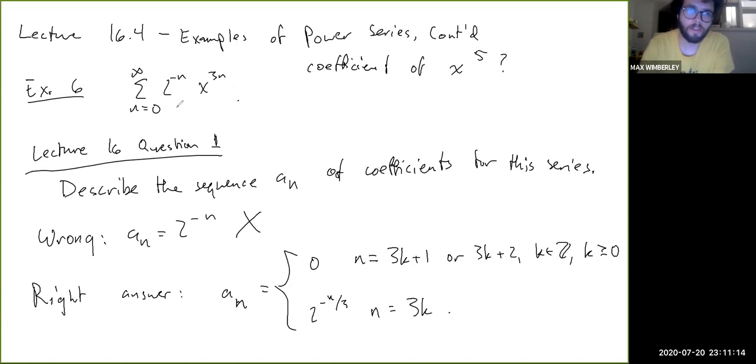Well, when n is 0, you get just 1. When n is 1, you get x cubed. When n is 2, you get x to the sixth. And then when n is anything bigger, you get something bigger than x to the fifth. So x to the fifth never shows up. So what is the coefficient of x to the fifth? Well, it's 0. Okay, because it doesn't show up in the series. So the coefficient is 0.